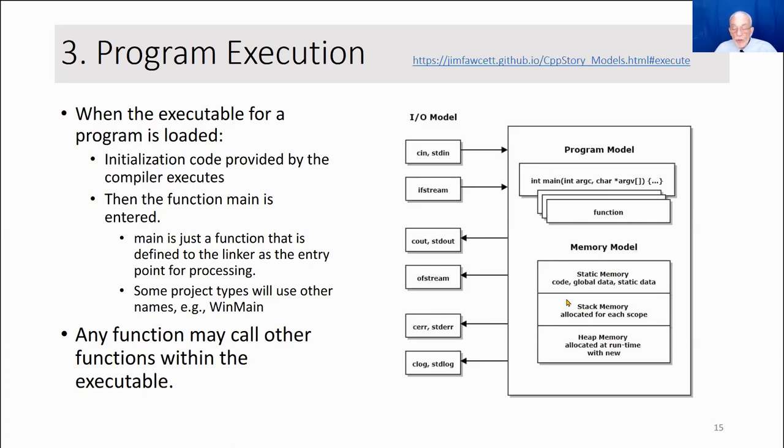So these three memories have different lifetimes. Static memory has a lifetime of the program. Stack memory has a lifetime of the thread entering a scope until it leaves the scope. Scope may be a function, but it might be a lower level scope like an if block, for example. Same thing happens there. And the lifetime of objects in heap memory start with a call to new and end with a call to delete.